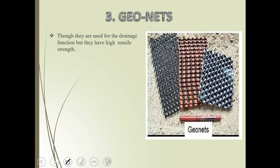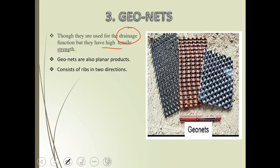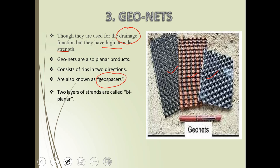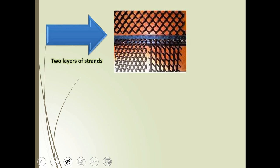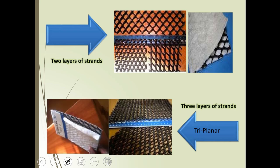Geonets: the main function of geonets is drainage. They have high tensile strength and are also planar products consisting of ribs in two directions. Geonets are also known as geospacers. Two layers of strands are called biplanar and three layers are called triplanar. We can use this geosynthetic in two layers as well as three layers.